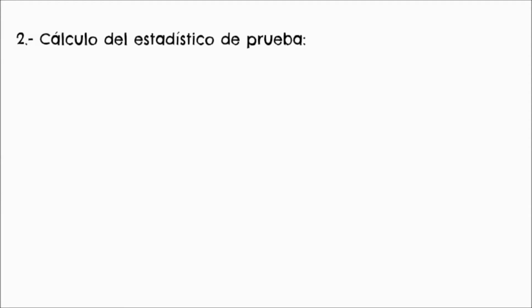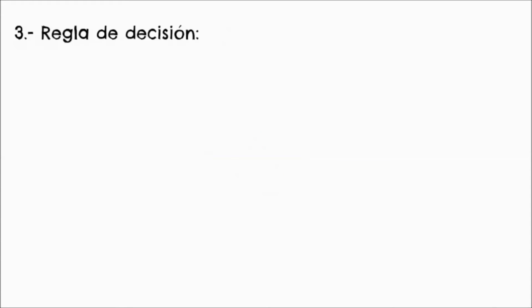Paso número 2, cálculo del estadístico de prueba. Z es igual a P mayúscula menos π sobre el error estándar, que es la raíz cuadrada de p minúscula por (1 menos p minúscula) sobre n, donde n es el número de la muestra, P mayúscula es la proporción que se está sometiendo a prueba, y p minúscula o π es la proporción que estamos probando.